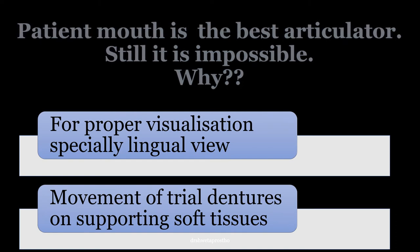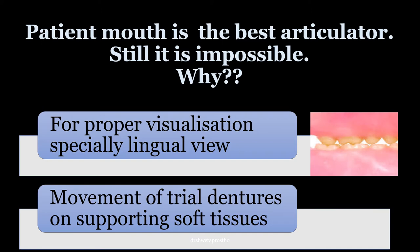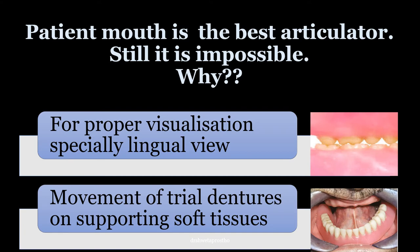The patient's mouth is the best articulator, but still it is nearly impossible to 100% simulate the jaw movements and develop the occlusion using any instrument. We all know an articulator serves as a patient in the absence of the patient, so patient cooperation is not a factor. It also reduces the patient's chair side time. Very importantly, the articulator allows for proper visualization of the work — teeth arrangement or occlusal correction — especially the lingual view. Movement of trial dentures on the supporting soft tissue and interference by the tongue will not allow us to do the laboratory work accurately. So we need articulators.